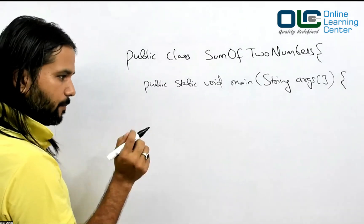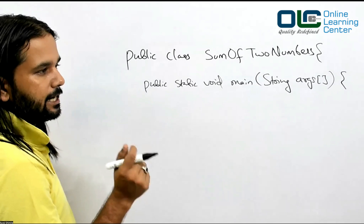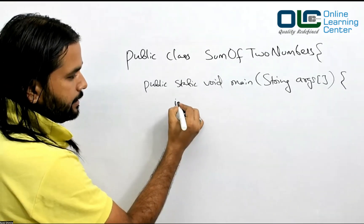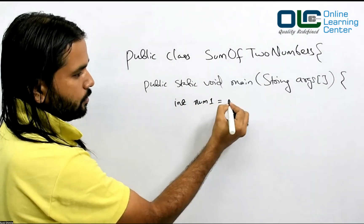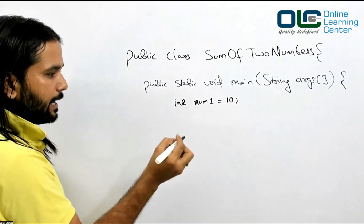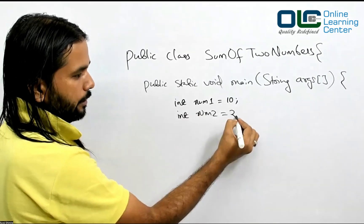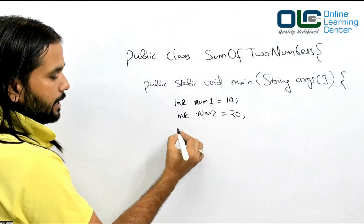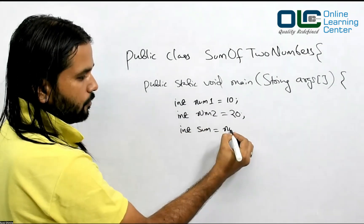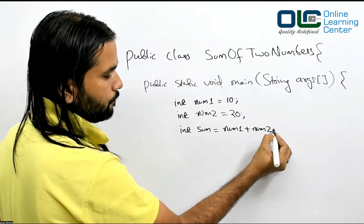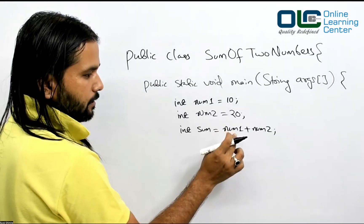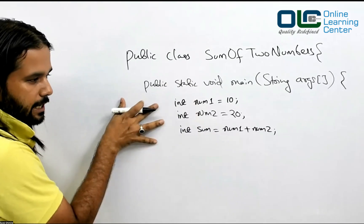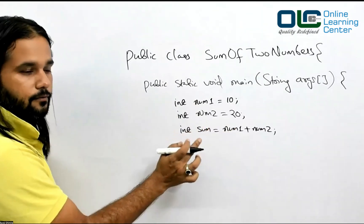To store a number in Java, you use the data type called int. I'll say int num1 = 10, hard-coded. And then int num2 = 20, also hard-coded. Now I have to add these two numbers and store the result in a variable, so I'll say int sum = num1 + num2. These three lines will add the two numbers and store the result in the sum variable.